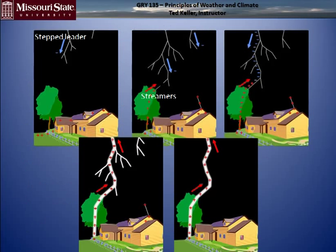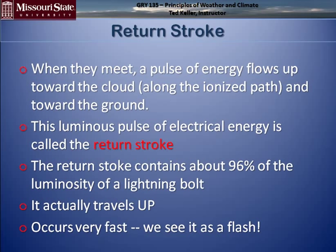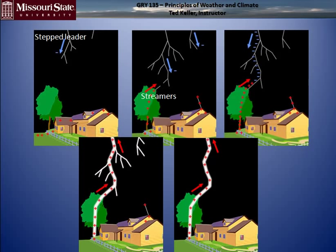There's a diagram. Step leaders fork their way down, trying to figure it all out. Remember that this is in air, so it's subject to moving around. Various channels occur — it's a turbulent kind of thing. But in this case, the tree was selected.